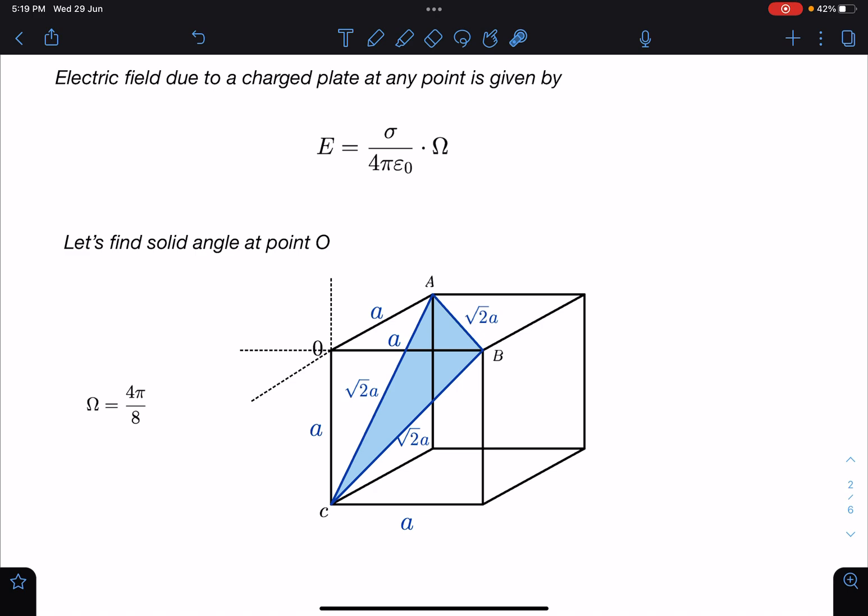Now you can see here there are eight such cubes: four are below and four are on top of this. At any point within the entire space with all possible directions, the solid angle is 4π.